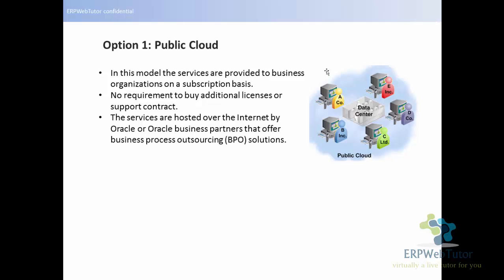The first option is the public cloud. In this model, services are provided to business organizations on a subscription basis — you buy a subscription and then access the software. There is no requirement to buy additional licenses or a support contract. The services are hosted over the internet by Oracle or Oracle business partners that offer BPO solutions. All the different companies purchase a subscription and access the software. That is option number one — the public cloud.